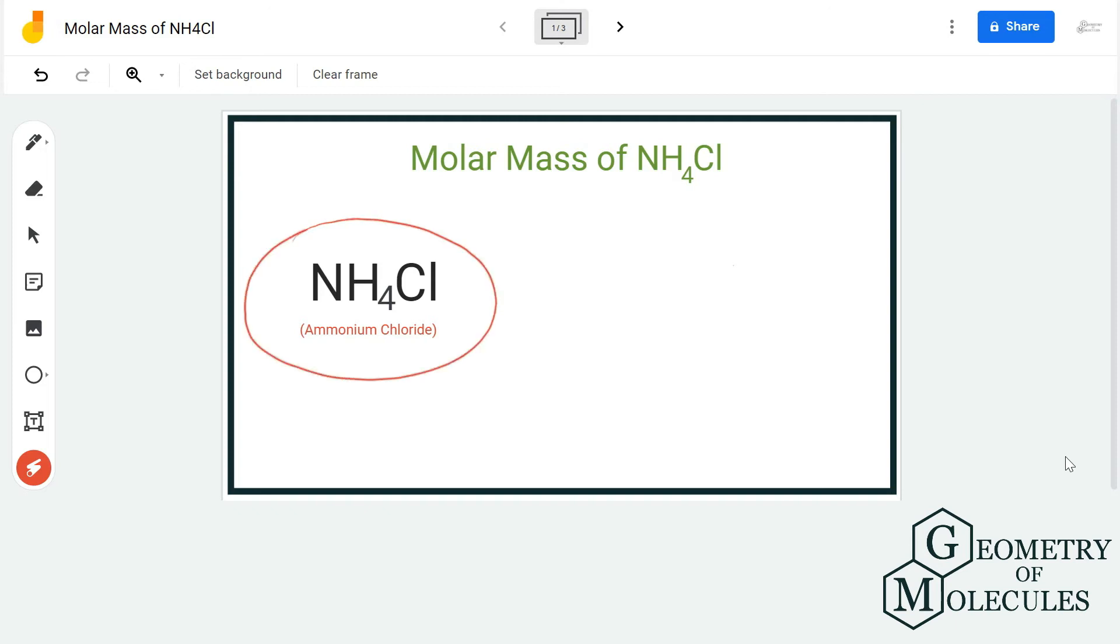Hi guys, today in this video we are going to find out the molar mass of NH4Cl, which is ammonium chloride. Make sure to use the right chemical formula to find out molar mass. If you mess up over here, there are high chances that you're not going to get the right molar mass.